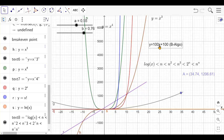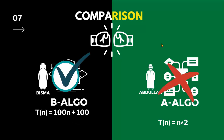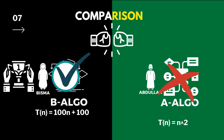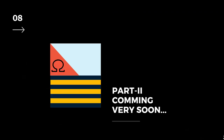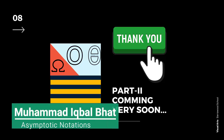After analyzing these two algorithms via the spreadsheet and their graphs, we conclude that B-algo is better than A-algo — Bisma's algorithm is better than Abdullah's. The complexity of B-algo is lesser than that of A-algo; A-algorithm grows faster for higher values of input while B-algo has linear complexity and grows slower. So Bisma scores over Abdullah in this comparison. That is all for this first part of the asymptotic notations video. See you soon in part 2.